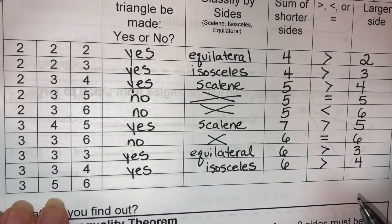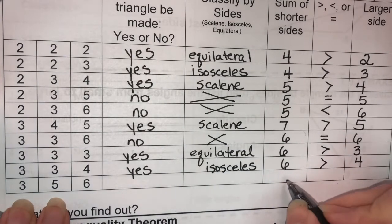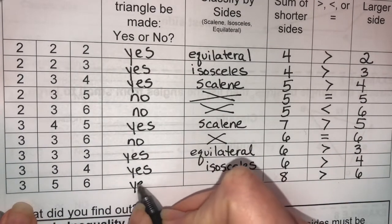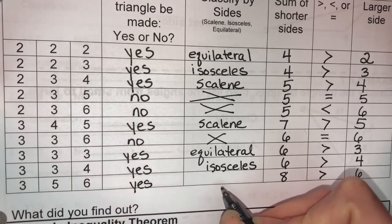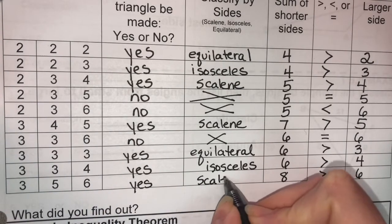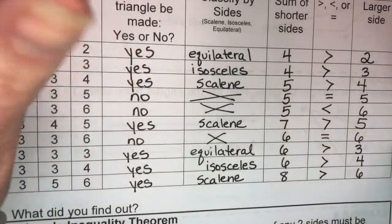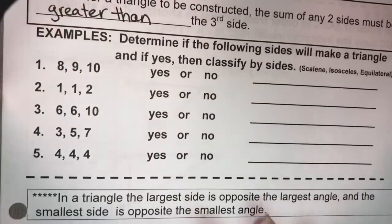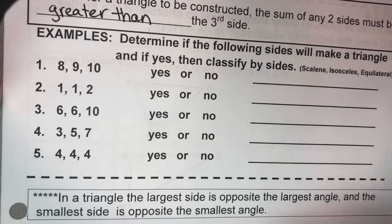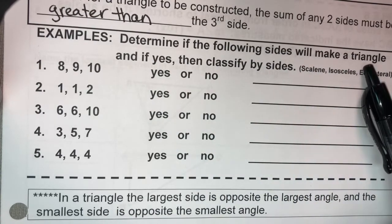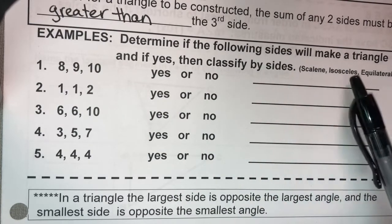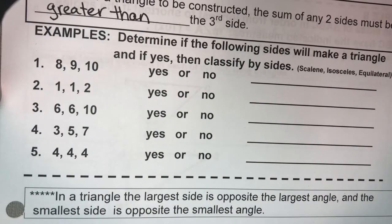On this last one, the two shorter sides are 3 and 5. 3 plus 5 is 8. The biggest side is 6. 8 is greater than 6. So yes, this makes a triangle. And since all three numbers are different, we would call this a scalene triangle. Now that we have gone through several examples together, I want you to pause your video and try these five at the bottom on your own. It says determine if the following sides will make a triangle, and if yes, then classify the triangle by its sides: scalene, isosceles, or equilateral. Give those a try and then play the video to see if you got it right.